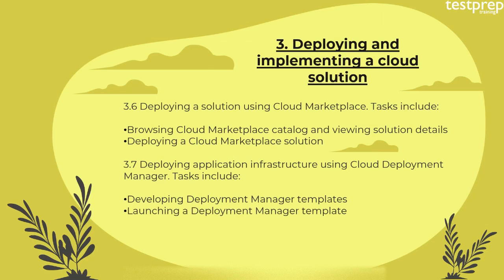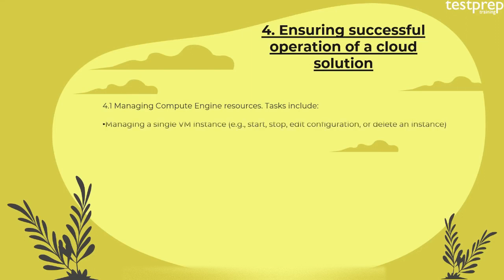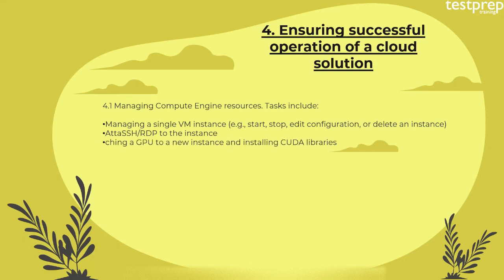Number seven: deploying application infrastructure using Cloud Deployment Manager — tasks include developing Deployment Manager templates and launching a Deployment Manager template. Fourth domain: ensuring successful operation of a cloud solution. Number one: managing Compute Engine resources — tasks include managing a single VM instance (start, stop, edit configuration, or delete an instance) and adding an SSH key to the instance.